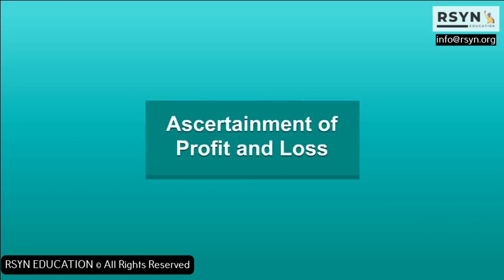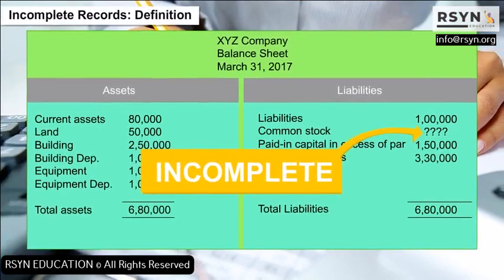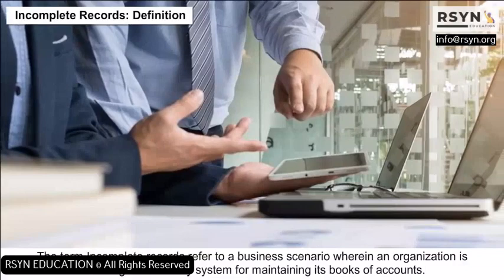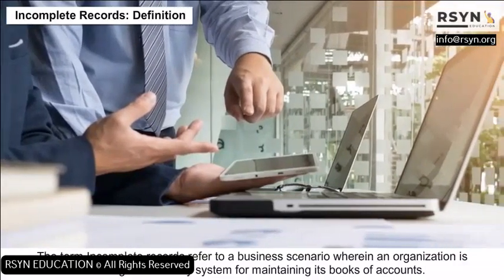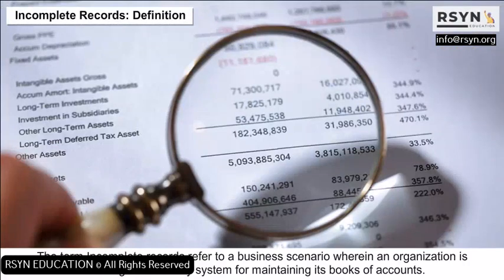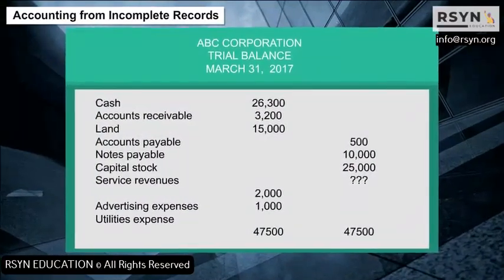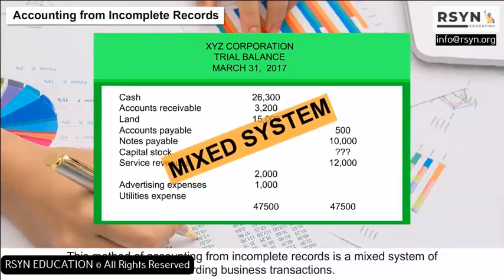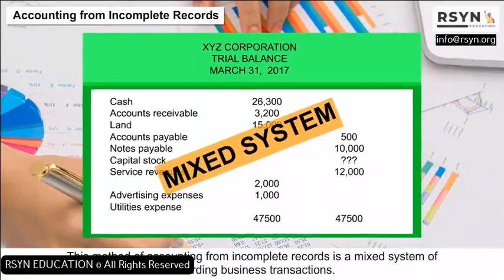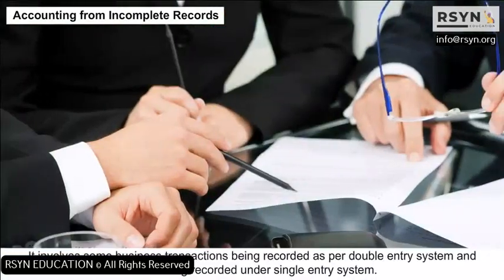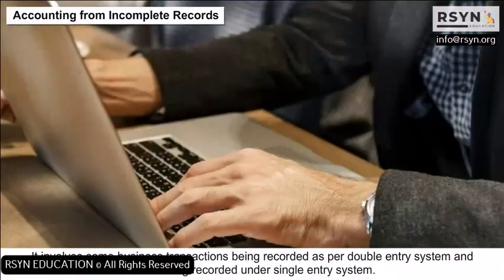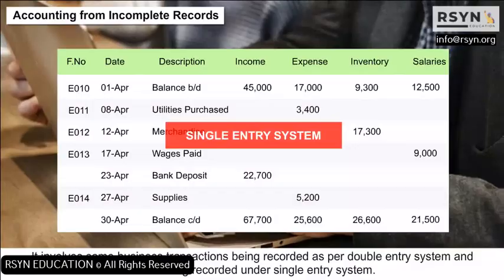Ascertainment of Profit and Loss: The term incomplete records refers to a business scenario wherein an organization is not using the double entry system for maintaining its books of accounts. Accounting from incomplete records is a mixed system of recording business transactions — it involves some transactions being recorded as per double entry system and some being recorded under single entry system.